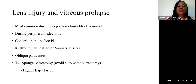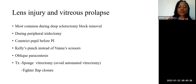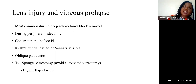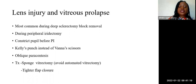Intra-operatively, there can be lens injury and vitreous prolapse, most common during deep sclerectomy block removal. Avoid a too deep block. During peripheral iridectomy, it is better to constrict the pupil first. Kelly's sponge should be used instead of Vannas scissors during the deep sclerectomy. During paracentesis, go obliquely at the plane of the iris so as not to injure the iris and the lens. Do not go too far inside to avoid injuring the lens capsule. If vitreous occurs, perform a sponge vitrectomy and a tighter flap closure.